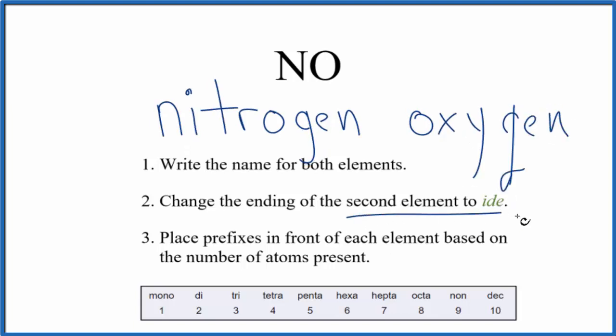And then for the second element, we'd change the ending to IDE. So this would just become IDE. So at this point, we'd have nitrogen oxide.